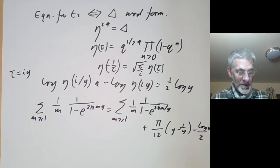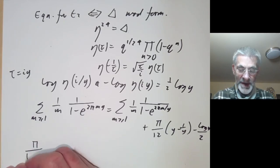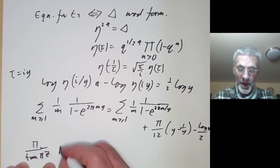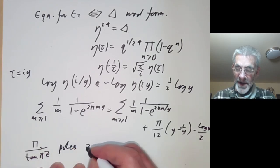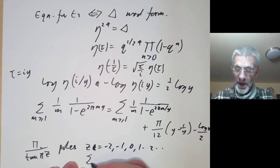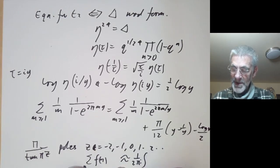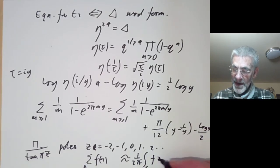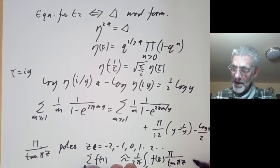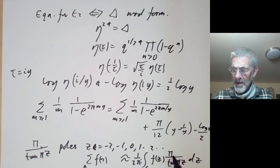To evaluate this, we recall the method from complex analysis of summing series using the fact that π/tan(πz) has poles of residue one at z equals …, −2, −1, 0, 1, 2, …. So the sum over n of f(n) relates to 1/(2πi) times the integral over some contour C of f(z) times π/tan(πz) dz, where C encloses all integer values up to some bound, and the value equals the desired sum plus other terms from further residues.